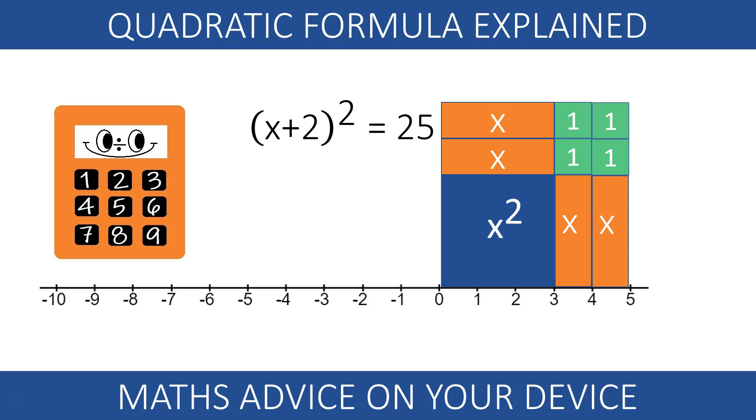This makes solving the quadratic equation easier. If the area is 25, each side x plus 2 must be 5. That makes x equals 3.